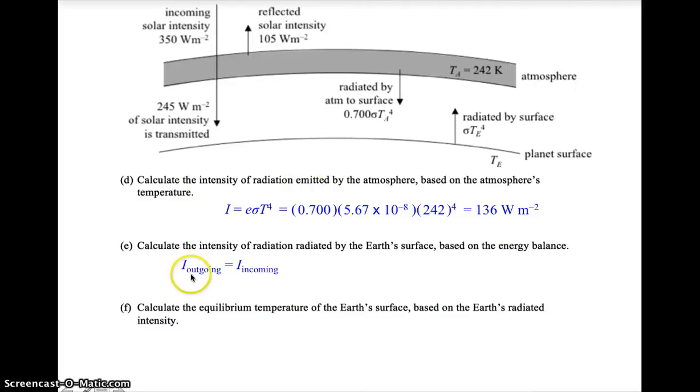So what's going out from the surface? It's just the amount radiated right here. And the part going in—there's the solar radiation which is transmitted through. This 245 goes into the Earth because it hits the Earth and is absorbed. And then there's the stuff radiated by the atmosphere toward the Earth. Those are the two things going into the surface, being absorbed by the surface. So we plug in that 245 from the solar which is transmitted, and the 136 from part D. And we get 381.